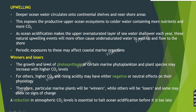Who are the winners and losers of ocean acidification? As carbon dioxide uptake increases, the growth and photosynthesis of certain marine phytoplankton and plant species may increase, making them winners. For others, higher CO2 and rising acidity may have negative or neutral effects. Particular marine plants will be winners, others losers, and some may show no change. The ultimate solution to ocean acidification is reduction in atmospheric carbon dioxide levels, and this must happen before it is too late.